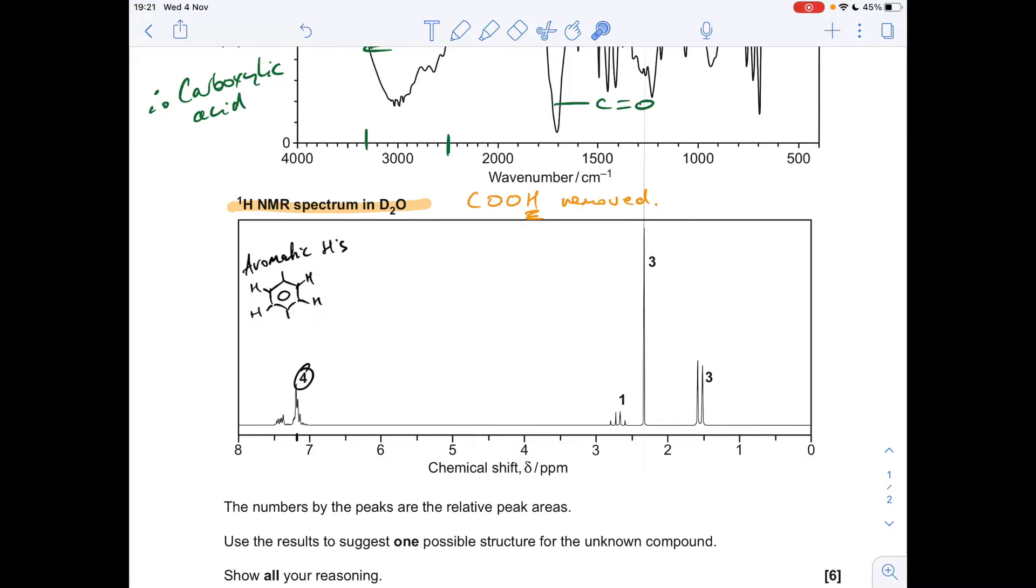Just to point out as well, that for certainly for OCR chemistry, and I'm sure it's the same for the other exam boards as well, you don't have to analyse the splitting pattern in an aromatic signal. So don't worry about what the signal looks like. If you've got something between seven and eight, it's an aromatic proton. So that's what we've got so far.